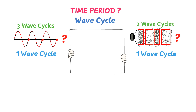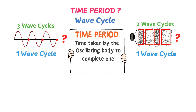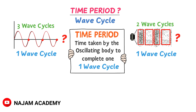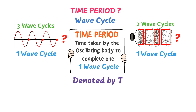Now listen carefully. Time period is defined as the time taken by the oscillating body to complete one wave cycle or one oscillation. Time period is denoted by capital T and its SI unit is second.